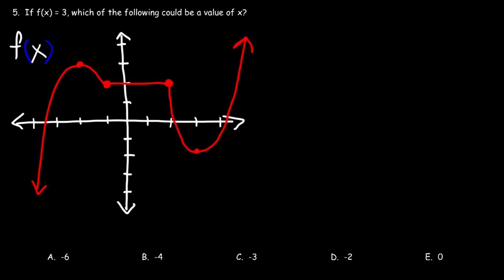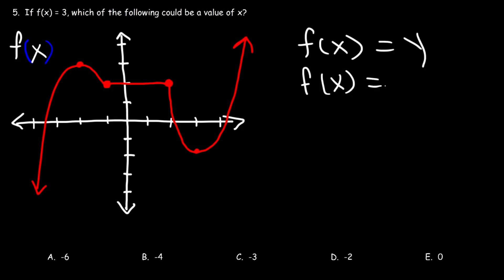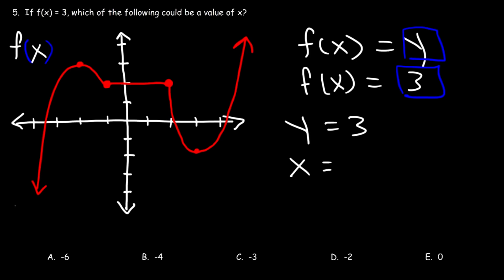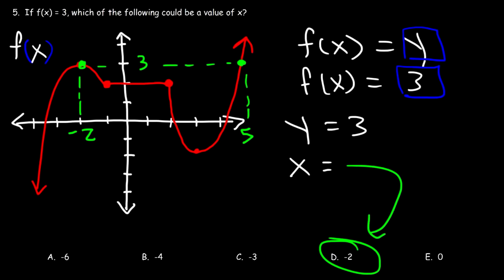Number 5. If f(x) = 3, which of the following could be a value of x? Recall that f(x) equals y, so if f(x) = 3 then y = 3. When y is 3, we can see that x can be negative 2, or approximately 5. Since 5 is not listed as an answer choice but negative 2 is, x can be negative 2.